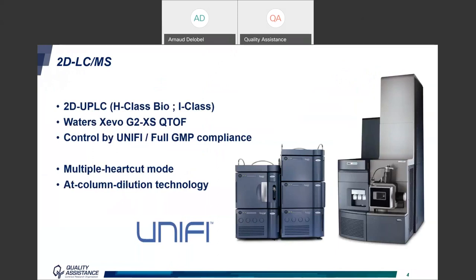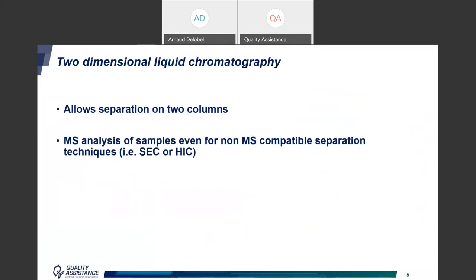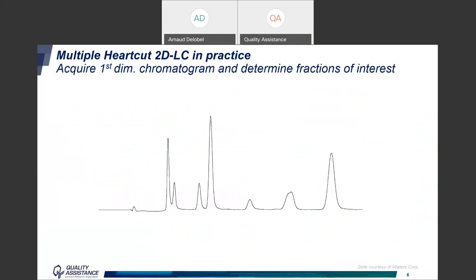The benefit of using a 2D system is that it allows separation on two dimensions or two columns, and it allows analysis of samples by MS when using non-MS-compatible separation techniques such as SEC. We can also use orthogonal methods on each dimension. In more detail, this is a first-dimension chromatogram, and we can imagine being interested in two particular fractions.